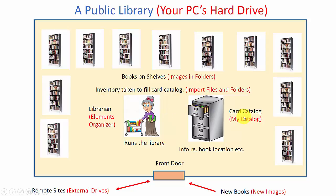The card catalog contains information about each and every one of the photos in your catalog, including its tags, where it's located, etc. If you upload new images from either a card reader or your camera, it shows them coming in the front door, so to speak. The remote sites are any external drives connected to your computer.